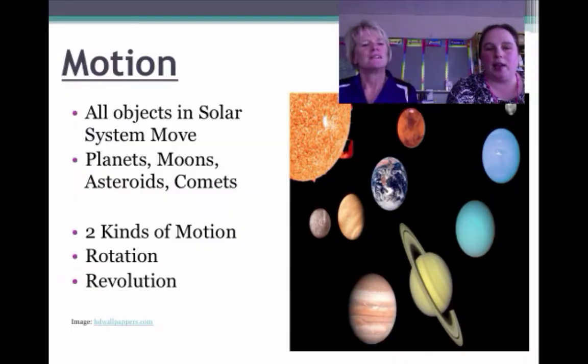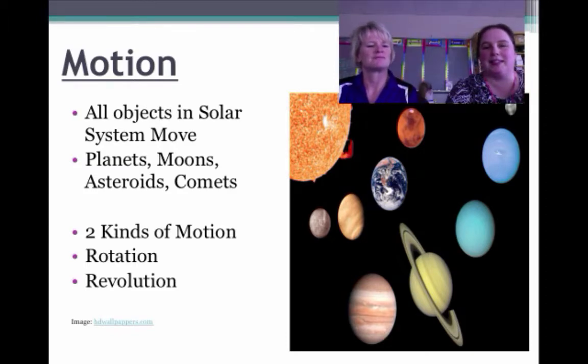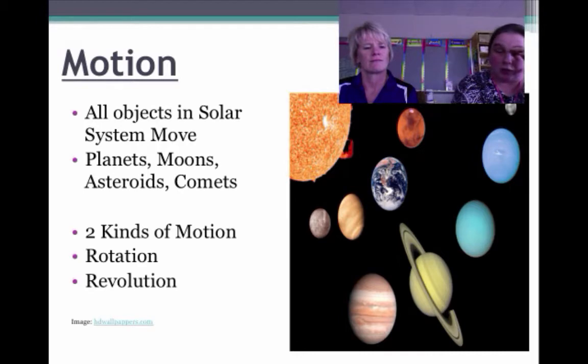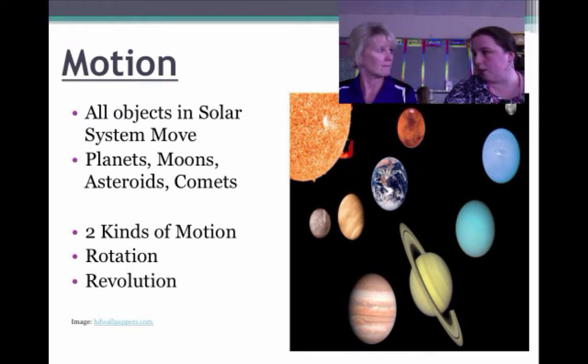So let's start off with what is motion in the solar system. We are talking about planets, moons, asteroids, and comets. And do you want to tell them what's the two kinds of motion that those can do? The two kinds of motions would be rotation and revolution. And so there's a difference between those two and that's what we're going to talk about today.